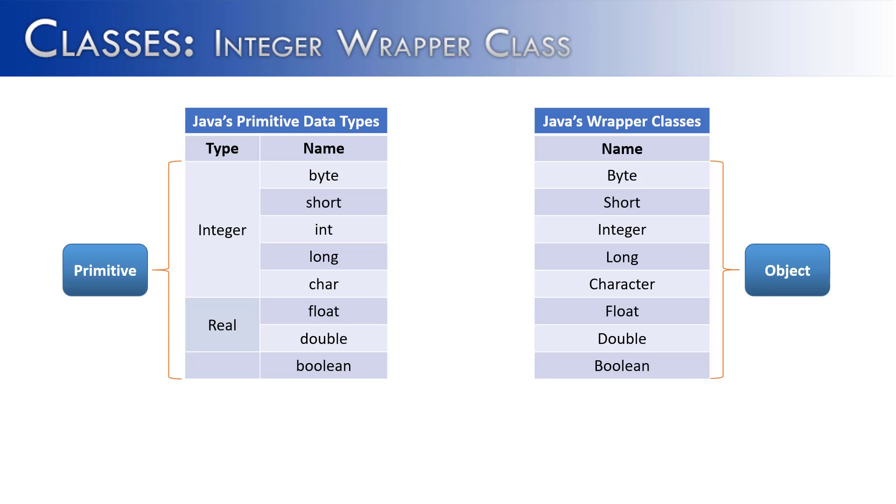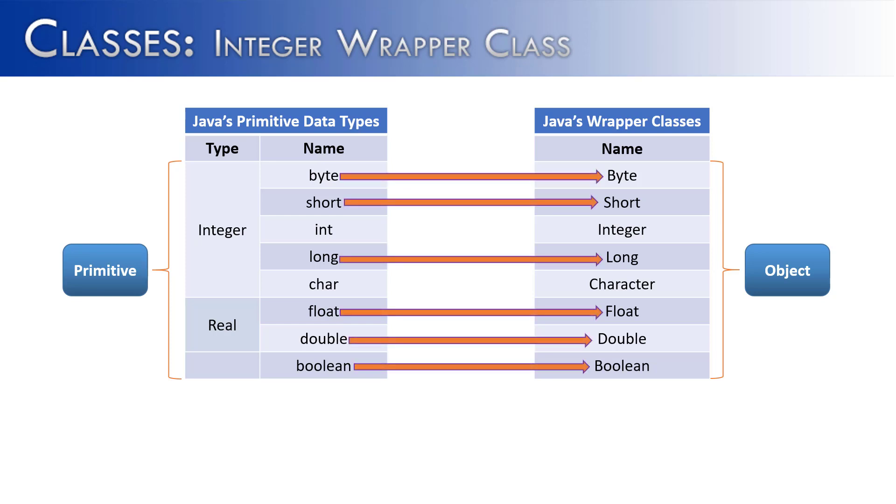The object names or the wrapper class names are very similar to their primitive names. We can see that byte, short, long, float, double, and boolean - their equivalent is just a capitalized version. So byte becomes capital Byte.